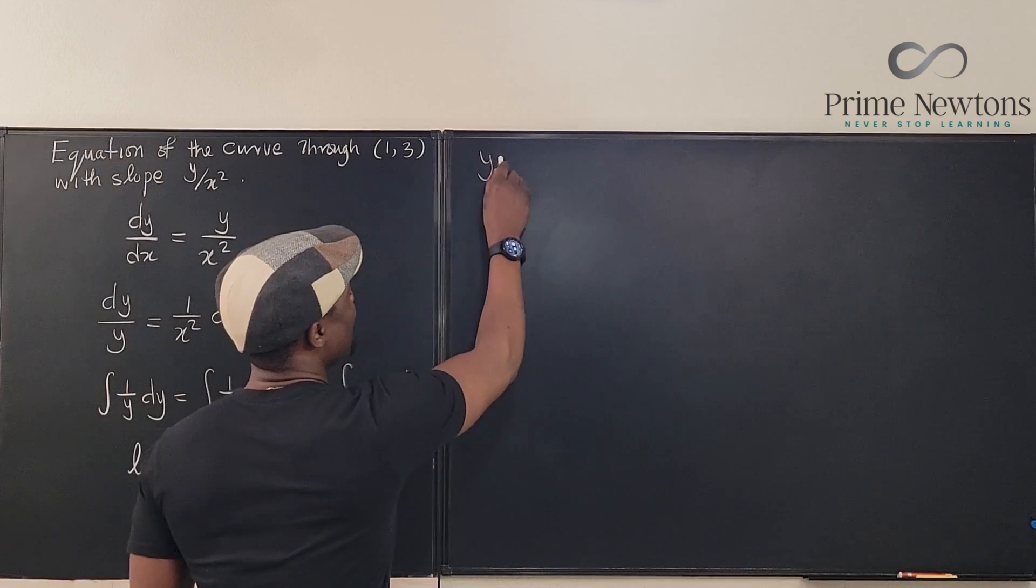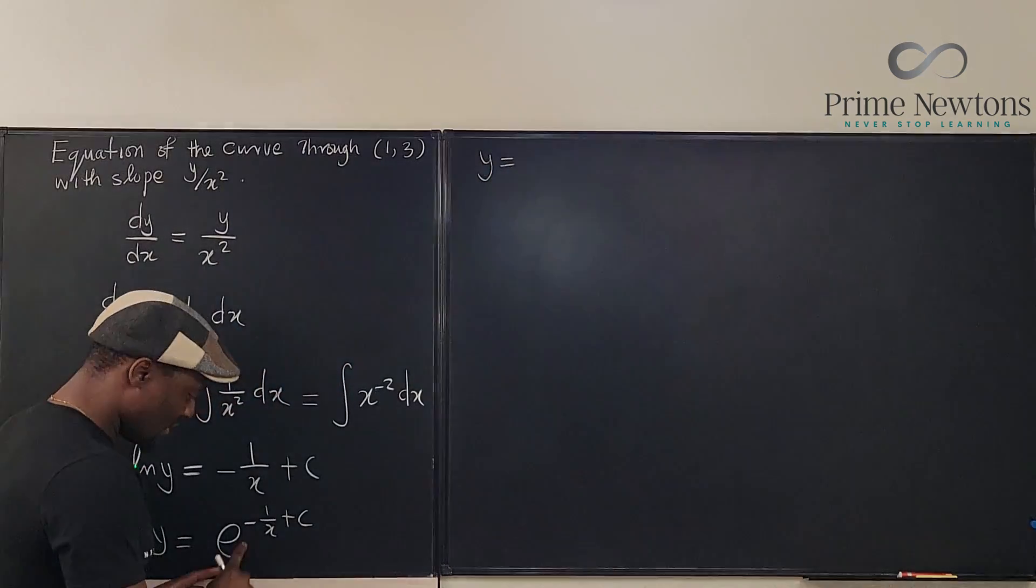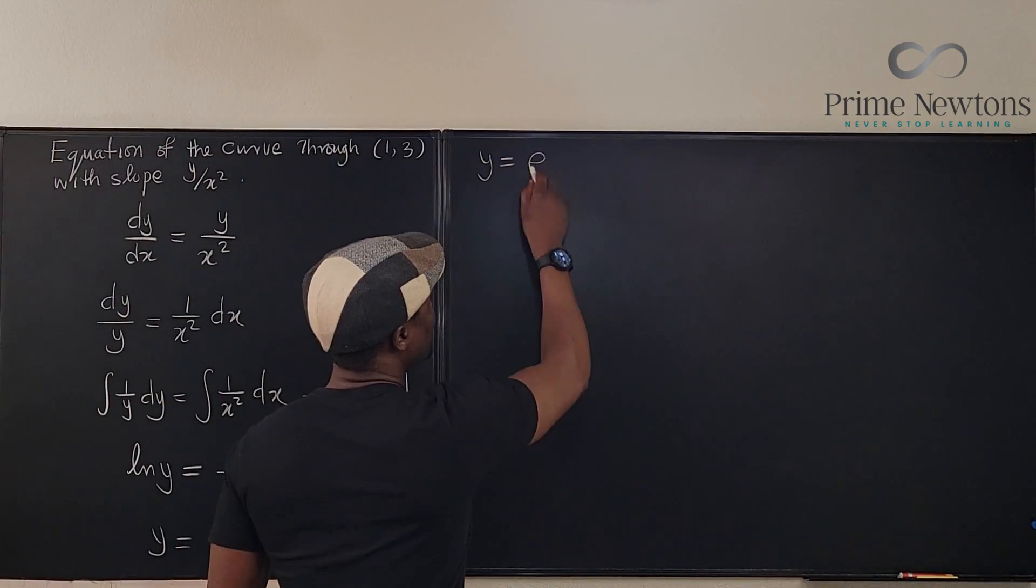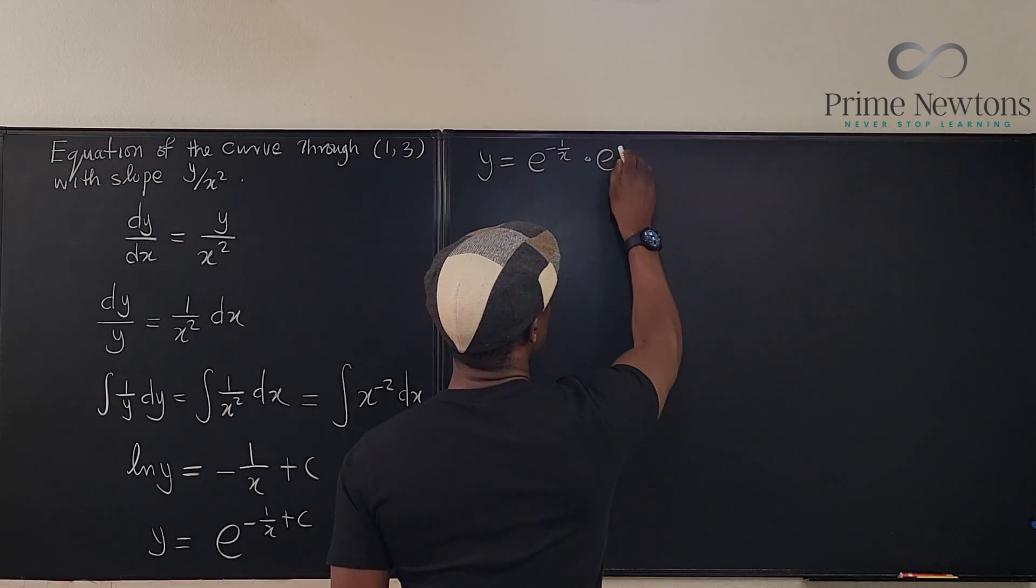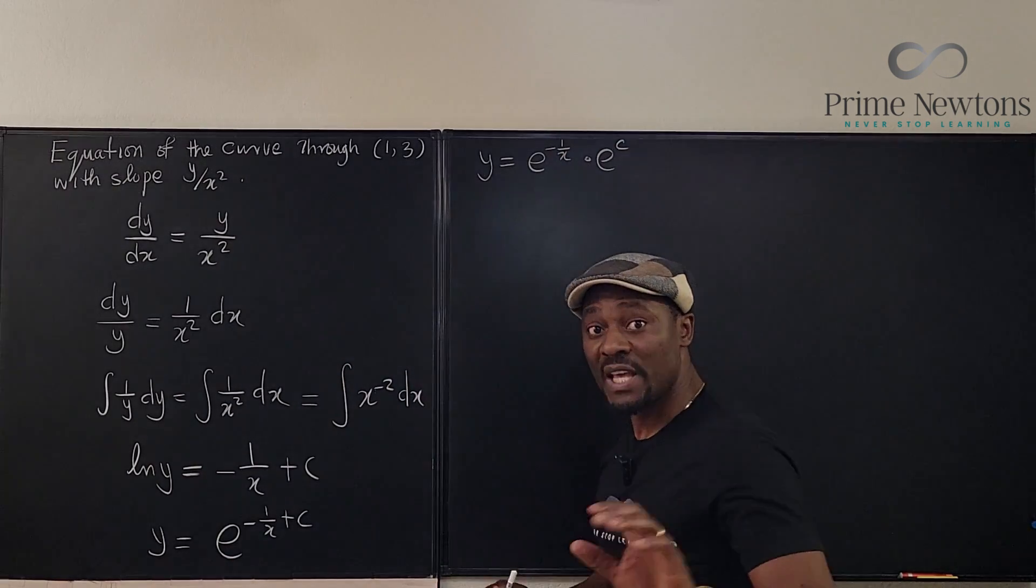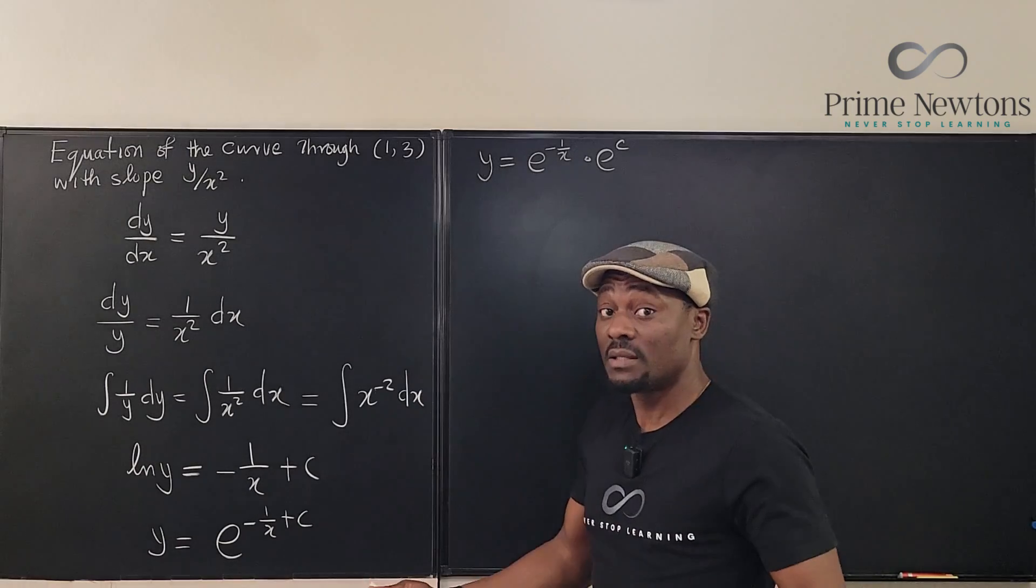equals e to the negative 1 over x, e to the negative 1 over x, times e to the c. But we can treat e to the c as a constant.